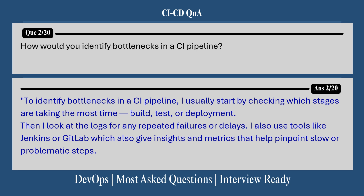The next question is about bottlenecks in a CI pipeline. How would you identify bottlenecks in a CI pipeline? To identify bottlenecks, I usually start by checking which stages are taking the most time — build, test, or deployment. Then I look at the logs for any repeated failures or delays, and I use tools like Jenkins or GitLab, which provide insight metrics that help pinpoint slow and problematic steps.